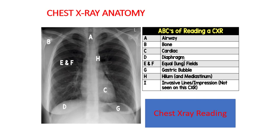H for hilum and mediastinum, I for invasive line or any impression — there may be a CV line that can be read in a chest X-ray. So the mnemonic A-B-C-D-E-F-G-H-I covers the chest X-ray anatomy that we usually read.